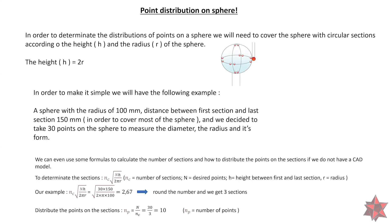In order to make it simple, we will have the following example. A sphere with a radius of 100 mm, distance between first section right here and the last section will be 150 mm in order to cover most of the surface of the sphere. And we decided to take 30 points on the sphere to measure the diameter, the radius and its form.